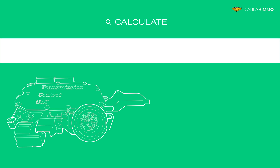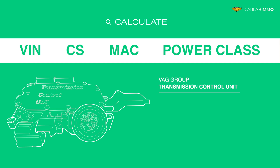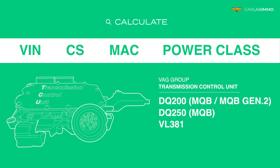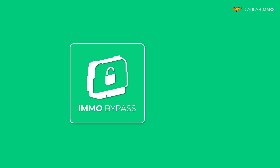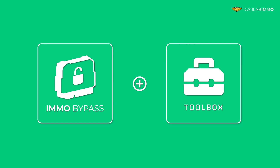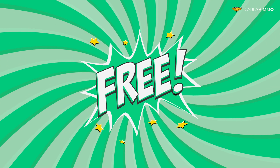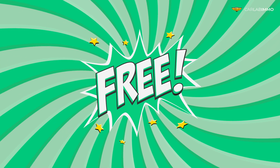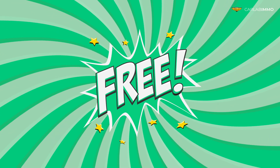Have you ever wondered what is the easiest way to read VIN, CS, MAC, and power class values from the transmission control unit of a VAG group car? Now you can do it with MO Bypass, thanks to its new function, the Toolbox. Reading the values is available for free in demo version as well.